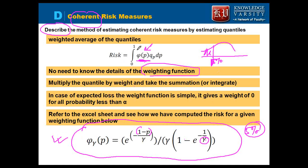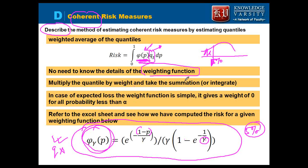Depending on that, this weighting function is applied. What you have is this weighting function, and then you have to multiply that by the quantile. You have to multiply this quantile with this weight. Whatever quantile value you have — let's say 98% or 97% — you multiply these two to get the result.